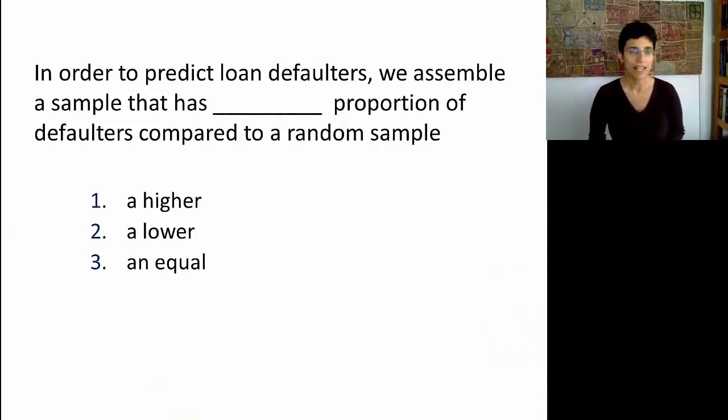To revisit the question from the end of last session, if I'm trying to predict loan defaulters, we assemble a sample that has a higher, a lower, or an equal proportion of defaulters compared to just taking a random sample.